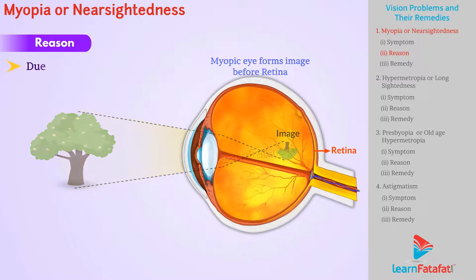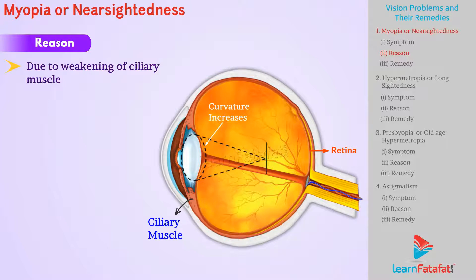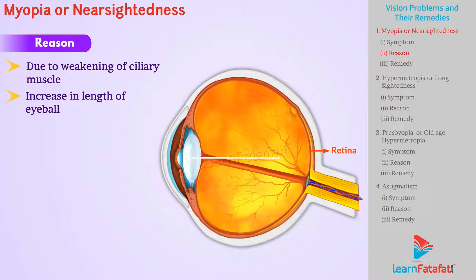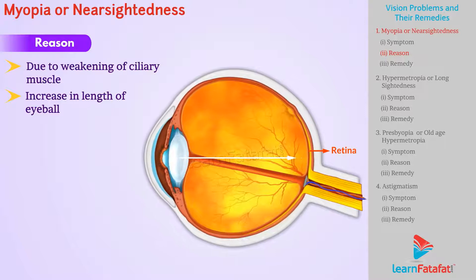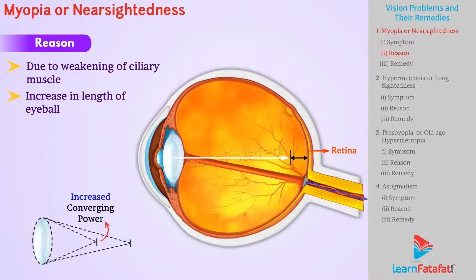Myopia is caused due to weakening of ciliary muscles, because of which the ciliary muscles do not relax sufficiently, and hence the curvature of the lens increases and focal length decreases. Another reason is if there is an increase in the length of the eyeball, then the distance between the lens and retina increases. Thus, the converging power of the lens increases and the image is formed before the retina.